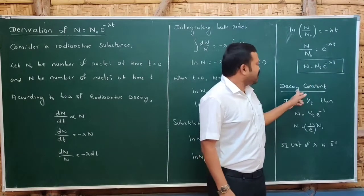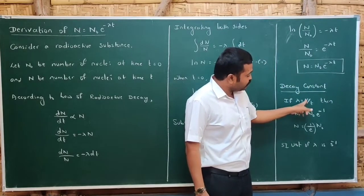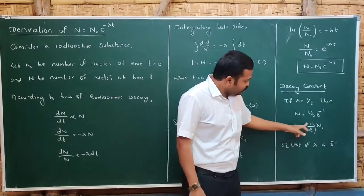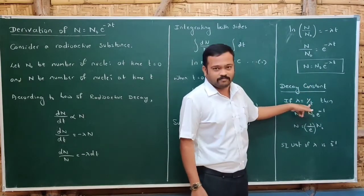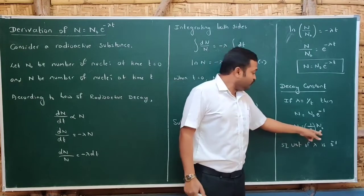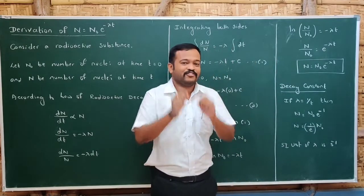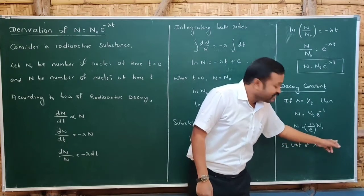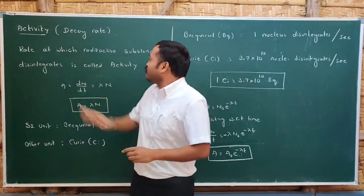Lambda is the decay constant. To understand it, if λ = 1/t, then λt = 1, giving N = N₀/e. So the decay constant is the reciprocal of the time during which the number of nuclei reduces to 1/e times the initial number of nuclei. Since it is the reciprocal of time, its SI unit is per second (s⁻¹).